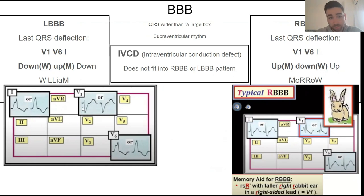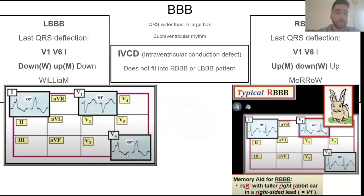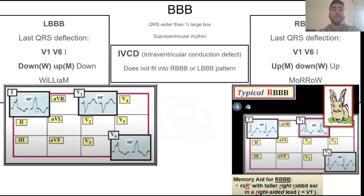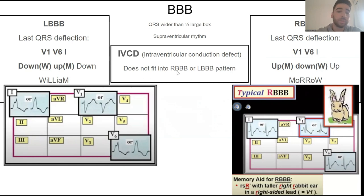In a left bundle branch block, you'll see the opposite — the WILLIAM pattern. Starting with V1, it should be a W. Continuing to spell WILLIAM, lead V6 should be an M — a large upward deflection. You confirm with lead one, which should also show an M. If this pattern does not exist — if V6 does not have a clear positive deflection, or lead one doesn't match V6 — we call it intraventricular conduction defect or conduction delay, which just doesn't fit the right or left bundle branch block pattern.